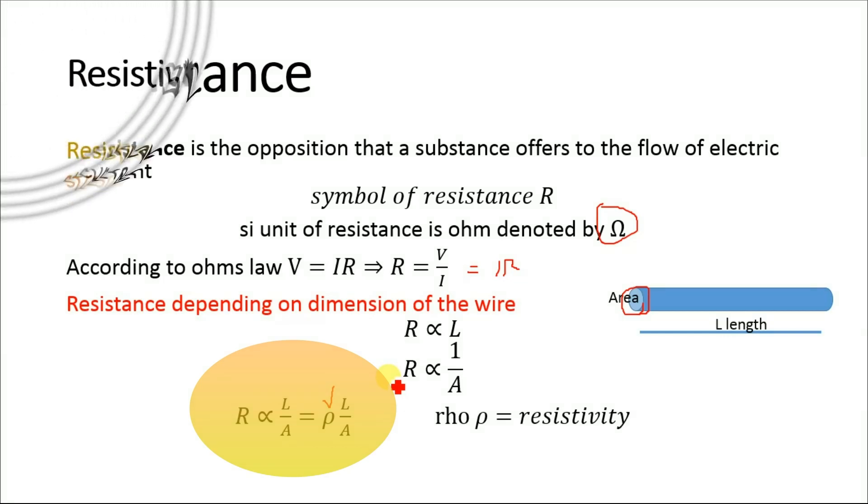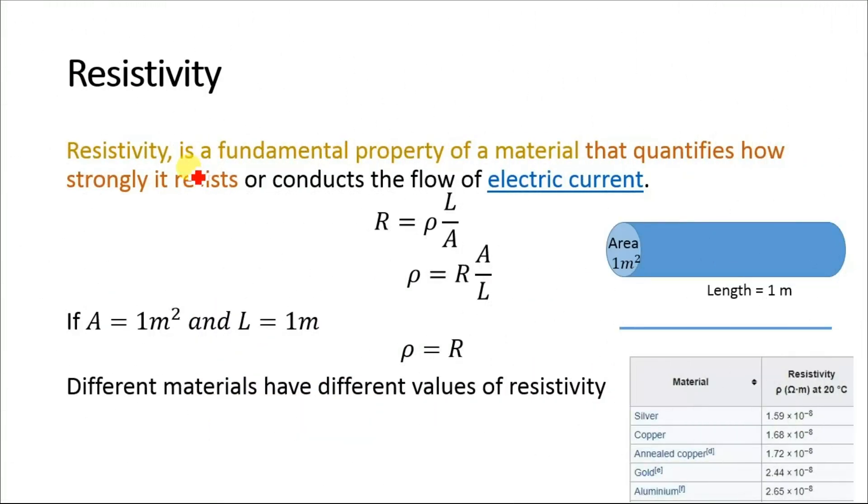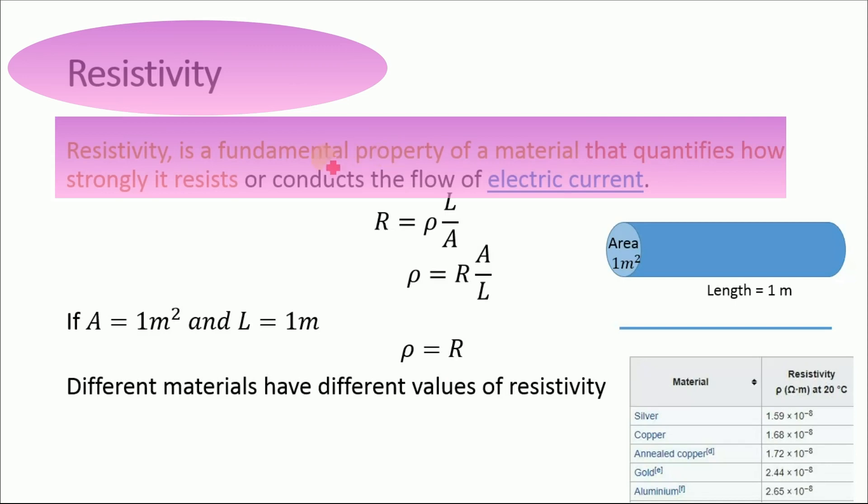Resistivity is a fundamental property of a material that quantifies how strongly it resists or conducts the flow of electric current. From this equation, resistivity can be derived as ρ equals R times A divided by L.